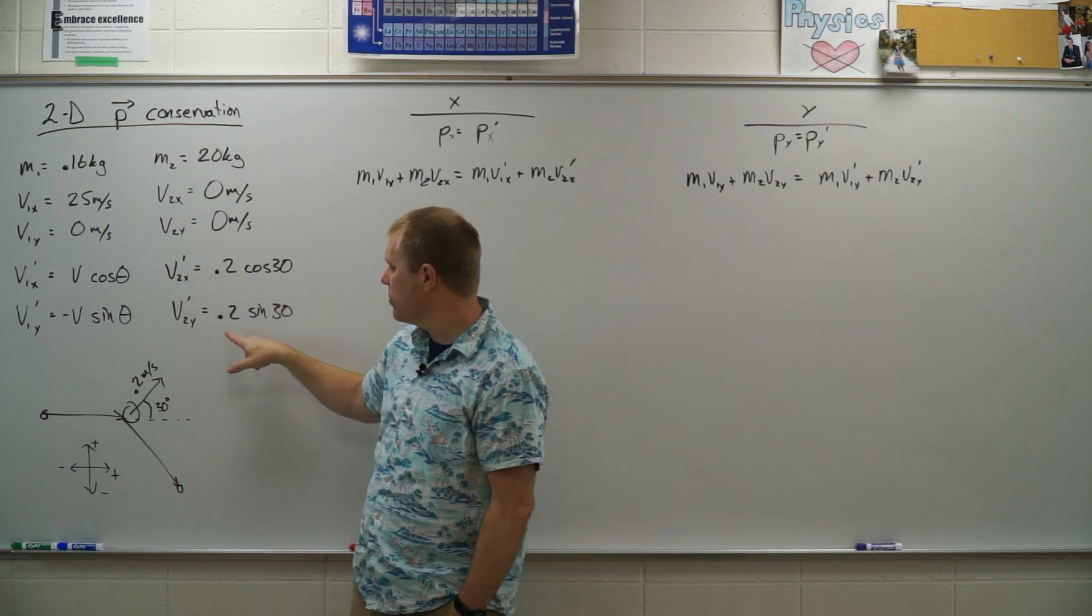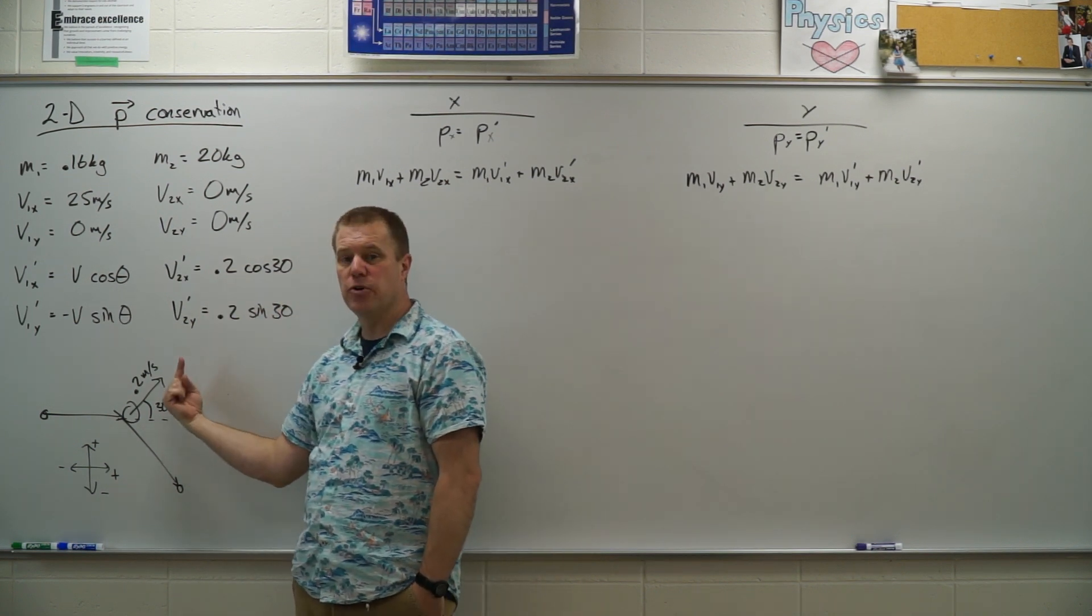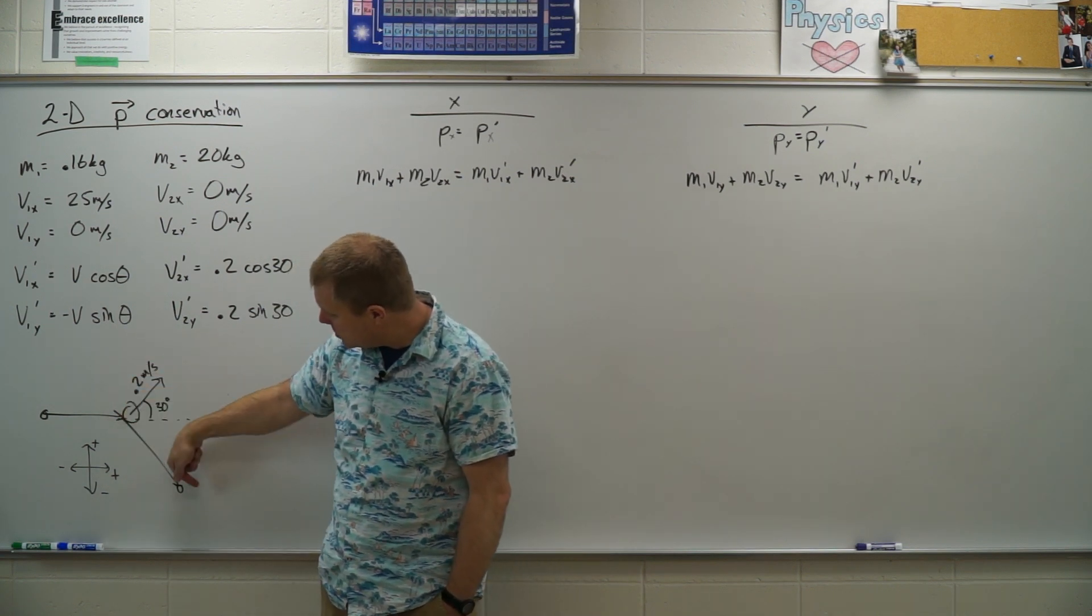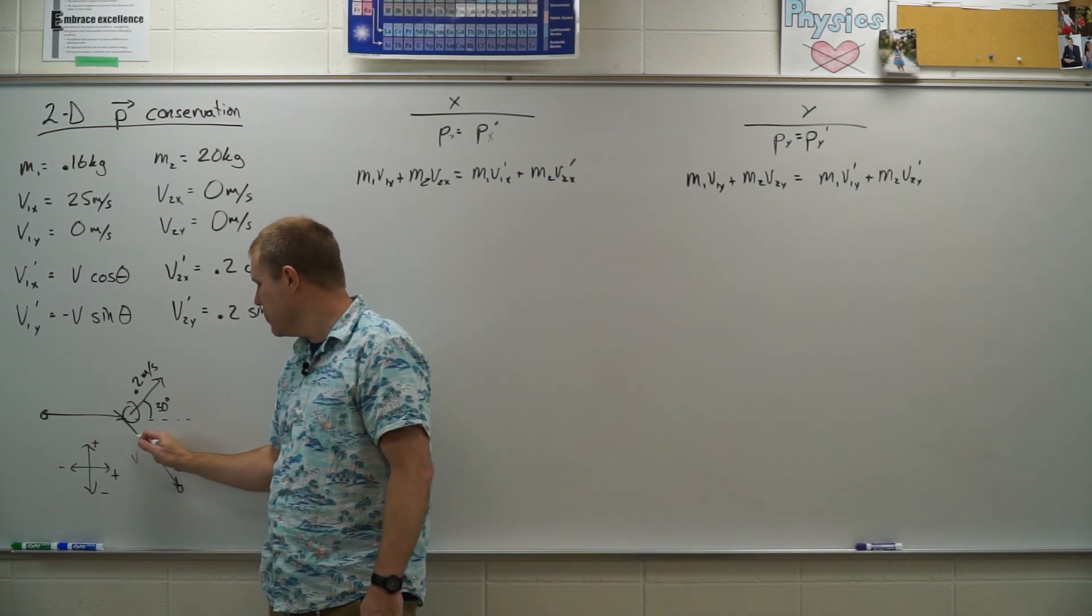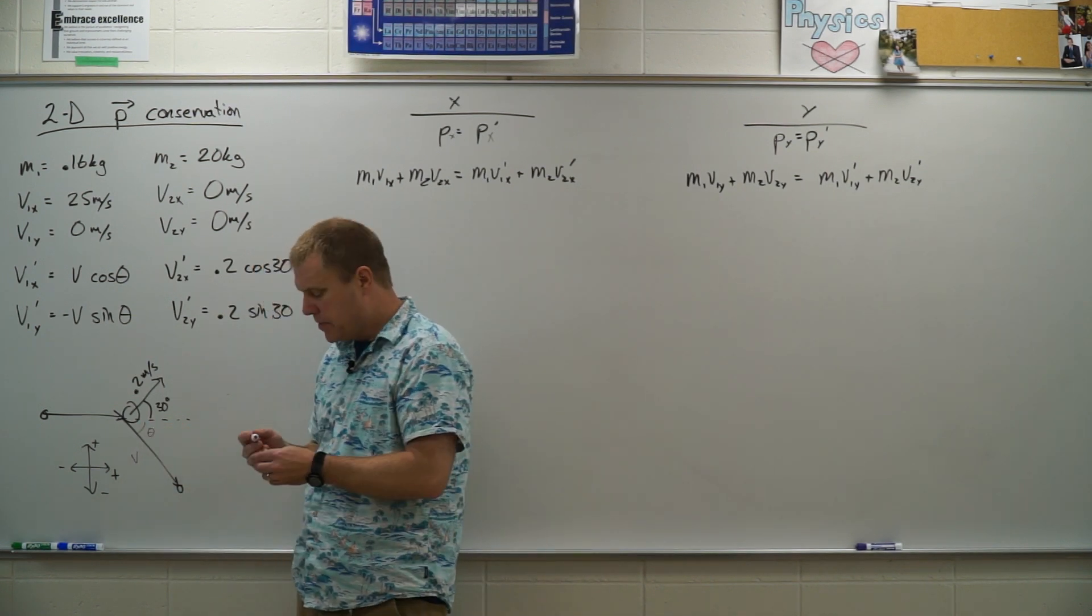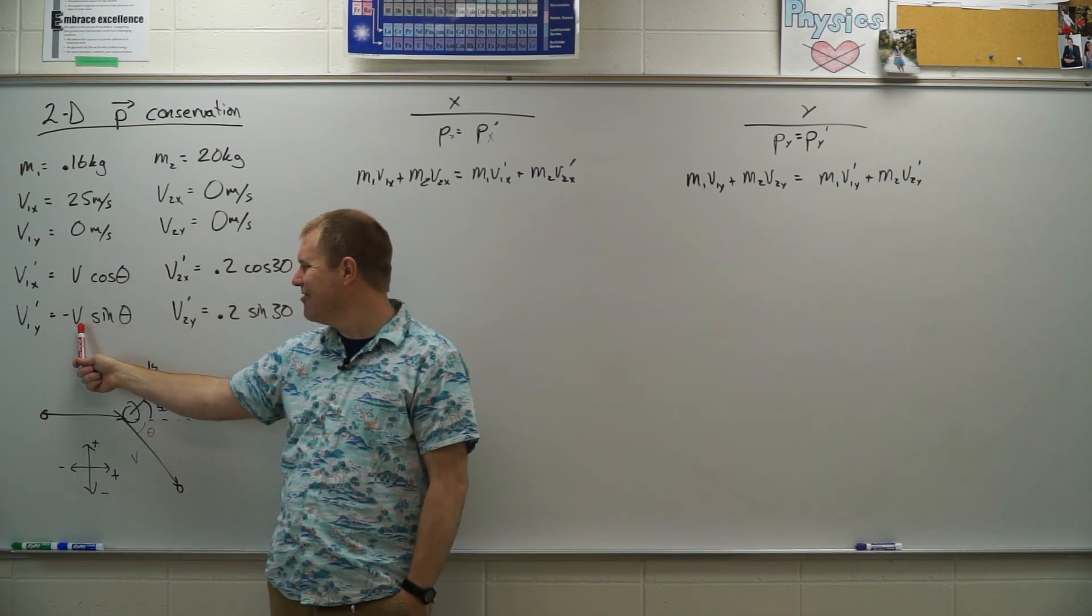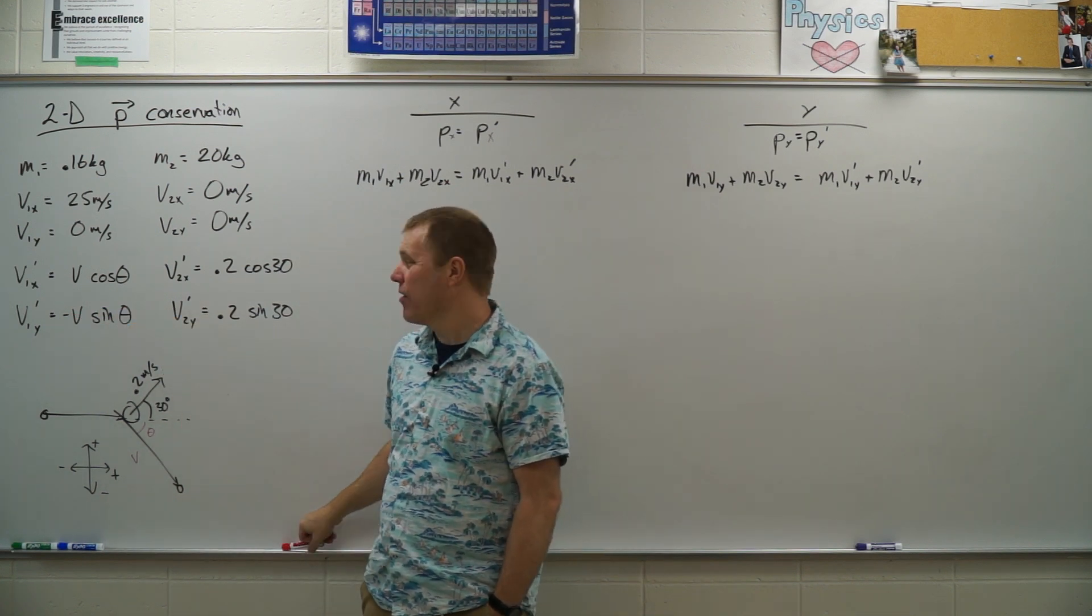I'm gonna choose it to be this way just because that's the picture we were given. So I'm gonna get 0.2 cosine 30, 0.2 sine 30. This one's positive because it's in my up direction. Also looking at my picture, they show that the puck goes off in this general direction. So I'm just going to identify this is V, this is theta. And so now I can say that the X direction is V cosine theta and the Y direction is negative V sine theta, the negative because it's pointing in my negative Y direction.